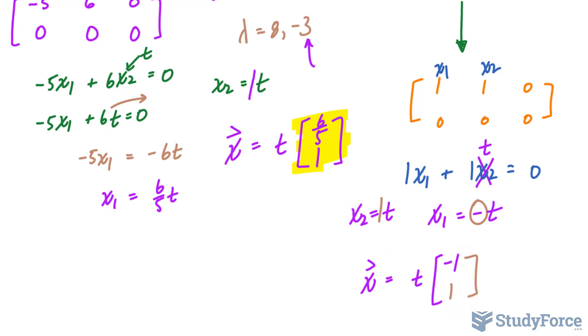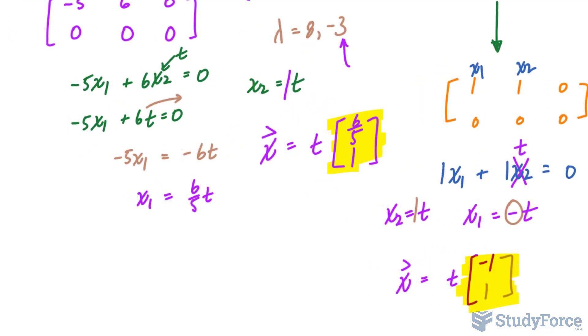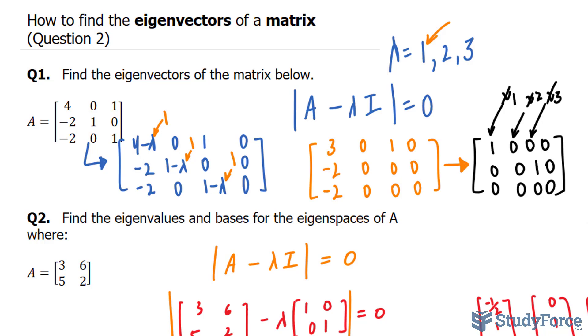Therefore, our eigenvectors is this highlighted one and this one. And there you have it. That is how to find the eigenvectors of a matrix from start to finish.